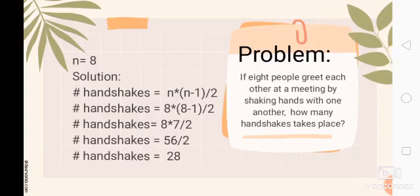Our problem: if eight people greet each other at a meeting by shaking hands with one another, how many handshakes take place? The value of N is 8, based on our problem, because it is the number of people. So our solution: number of handshakes equals N times (N minus 1) divided by 2. Substituting 8 for N, we get 8 times (8 minus 1) divided by 2, which equals 8 times 7, giving us 56 divided by 2, which equals 28. That's how we solve this problem — we get 28 handshakes for 8 people.